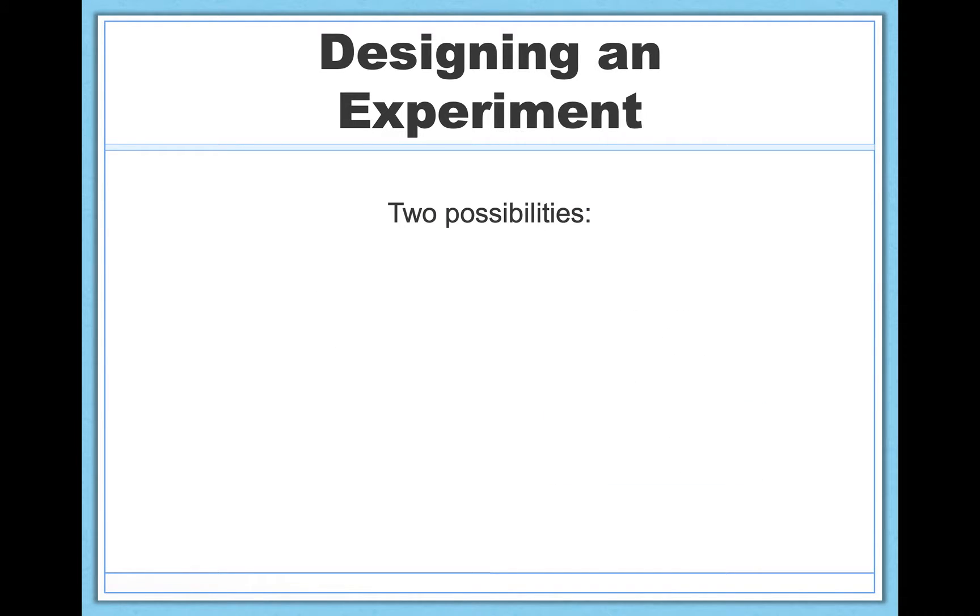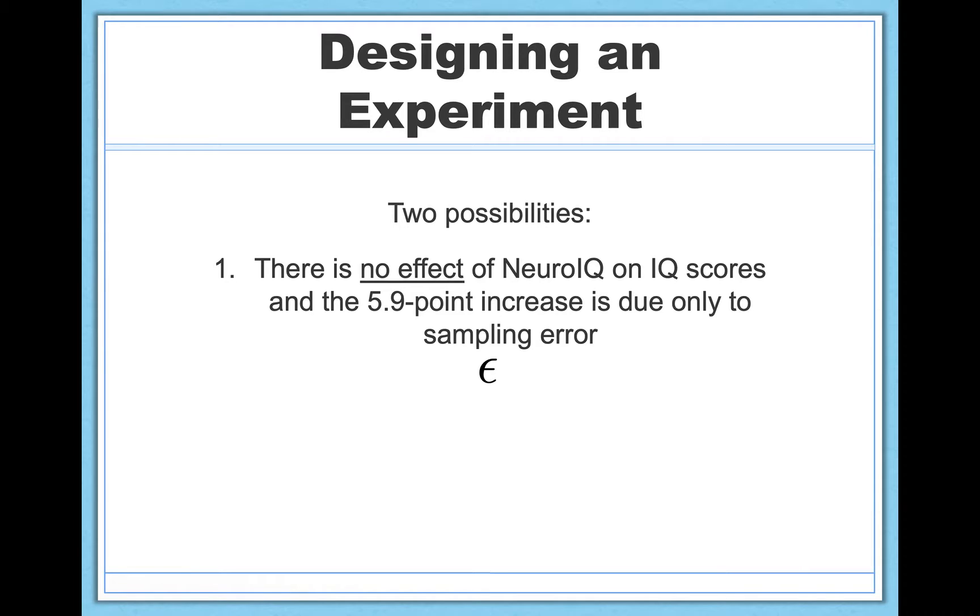Well, this is where two possibilities come into play. First of all, it's possible that there is no effect of NeuroIQ on IQ scores, and the 5.9-point increase that we observed in our sample is due only to sampling error, epsilon.